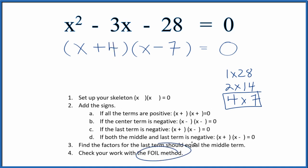Now I'm going to check my work with the FOIL method. So the first term is x times x. Inside terms, that's 4 times x. That gives me 4x. The outside terms, x times negative 7. So that's negative 7x. And then the last term is 4 times negative 7 is negative 28.